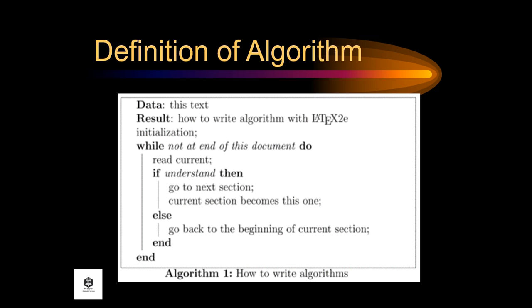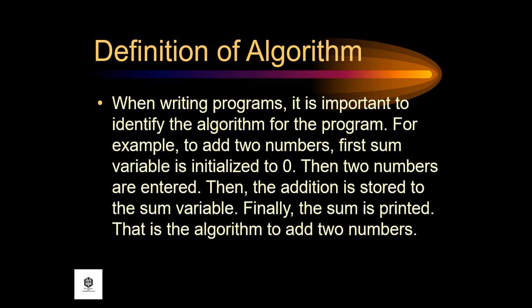This is how to write algorithms. When writing programs, it is important to identify the algorithm for the program. For example, to add two numbers: first, the sum variable is initialized to zero; then, two numbers are entered; then, the addition is stored to the sum variable; finally, the sum is printed. That is the algorithm to add two numbers.